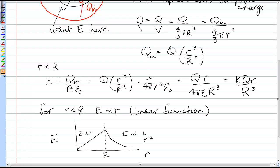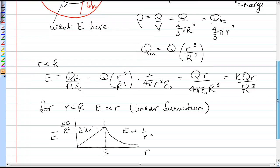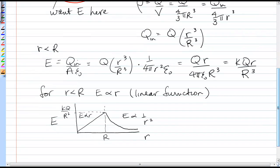The graph does join up at this point at little r equals capital R, and that value would be kq over capital R squared. So, there's an example of using Gauss's law for an insulating sphere.